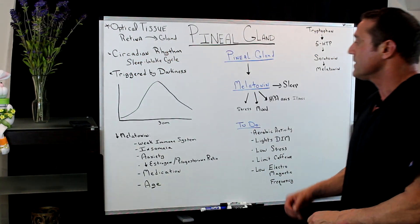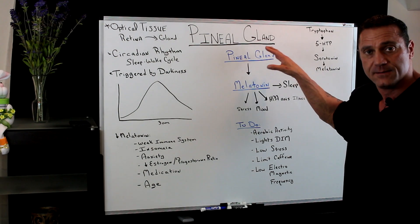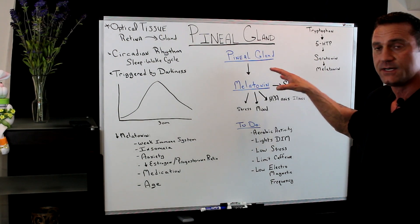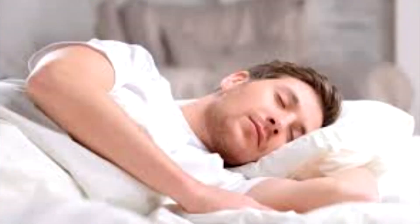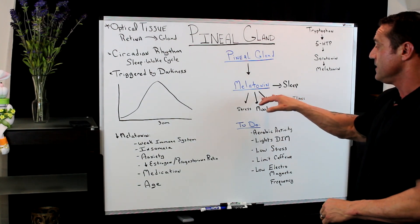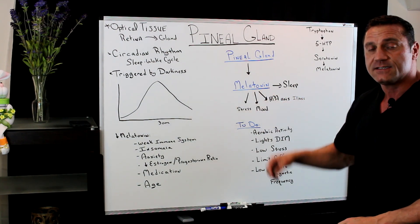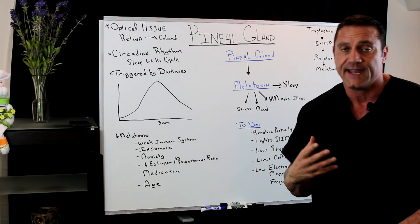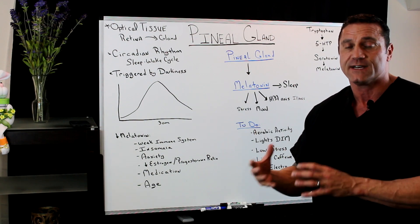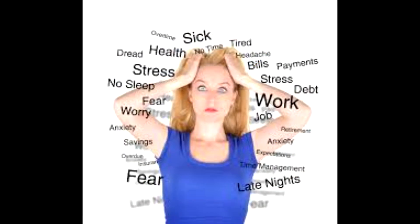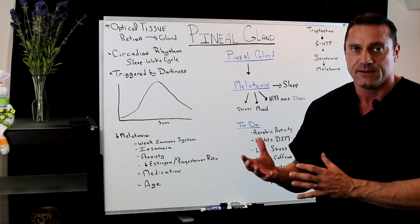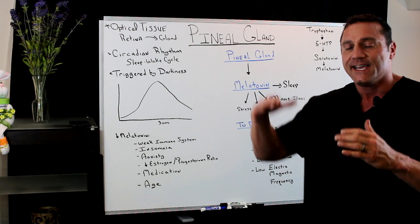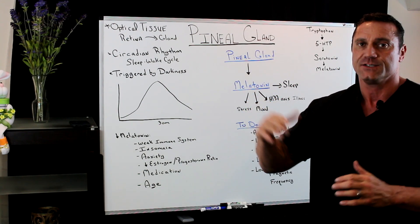Melatonin is activated when the pineal gland releases it, and it's primarily involved with our sleep. It's also involved with our HPA axis — the hypothalamus-pituitary-adrenal axis. This is why when we're stressed out, have anxiety, or have adrenal issues, we can't sleep, because elevated cortisol levels shut down melatonin production.